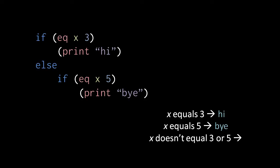Now in some cases, you might wish to have mutual exclusion between more than just two cases — you might have three cases, as we have here. In this example, again when the condition tests true, we execute just the body of the if; otherwise we execute the body of the else. But this else body itself contains another if statement, so when the else executes, the condition of that if statement is tested, and if true then it prints by, otherwise not. Effectively, we have three mutually exclusive cases: when x equals three the code prints high, when x equals five it prints by, but when x doesn't equal three or five, nothing happens.